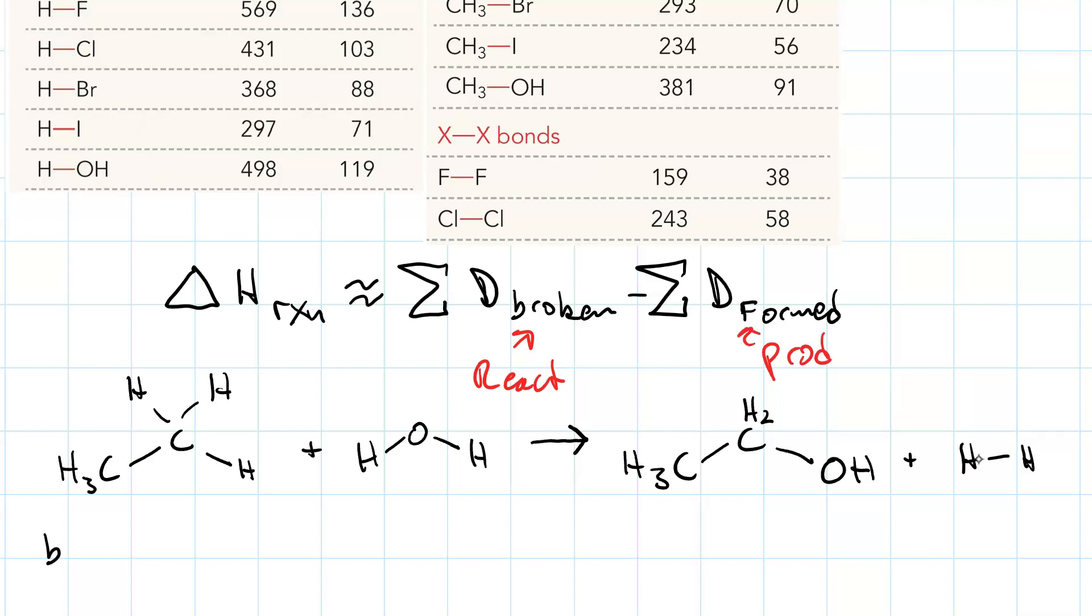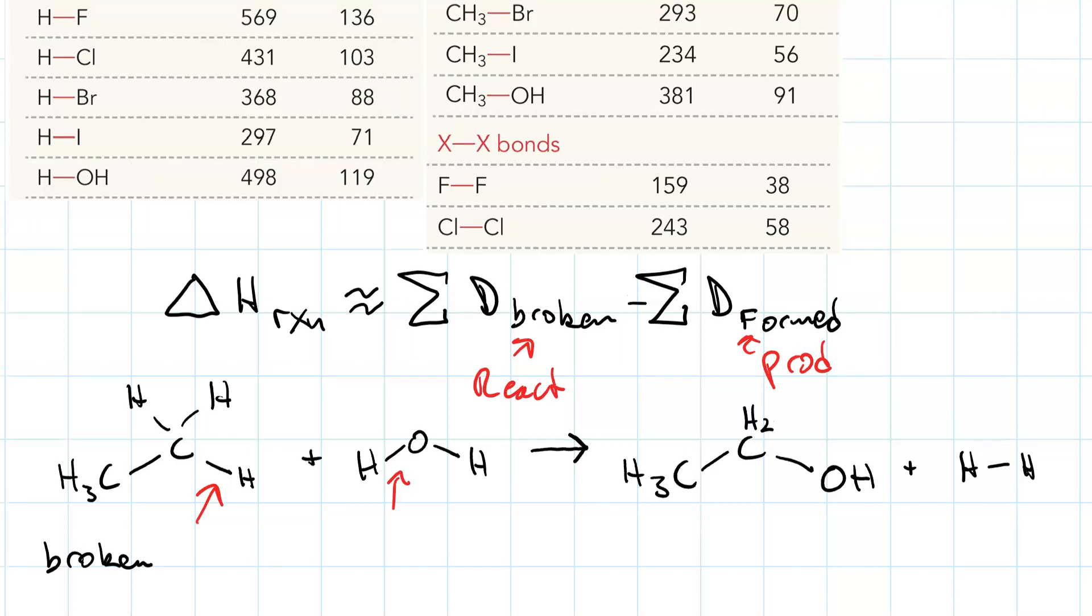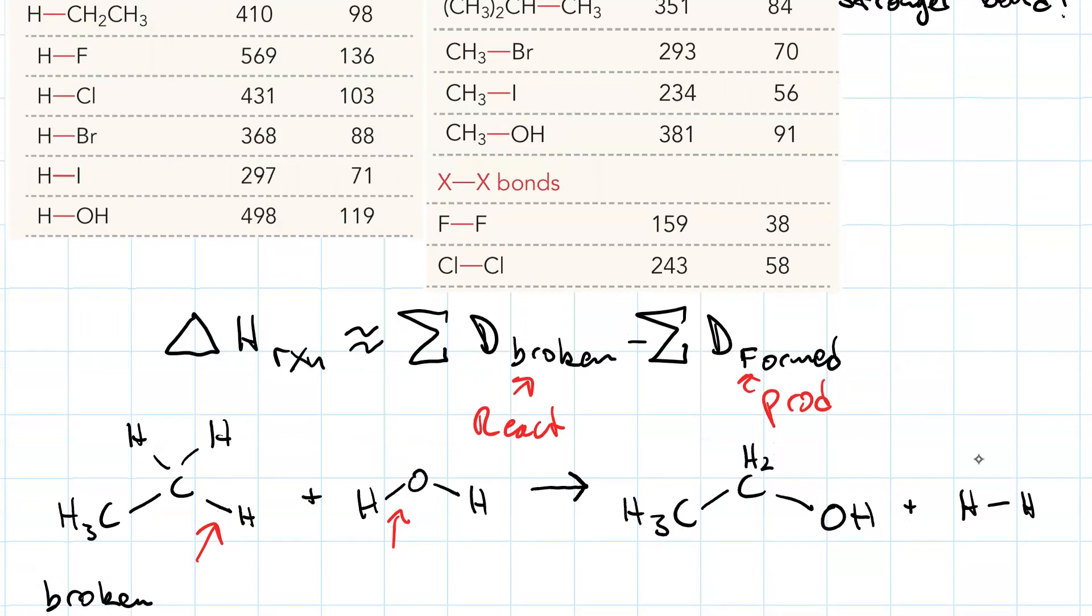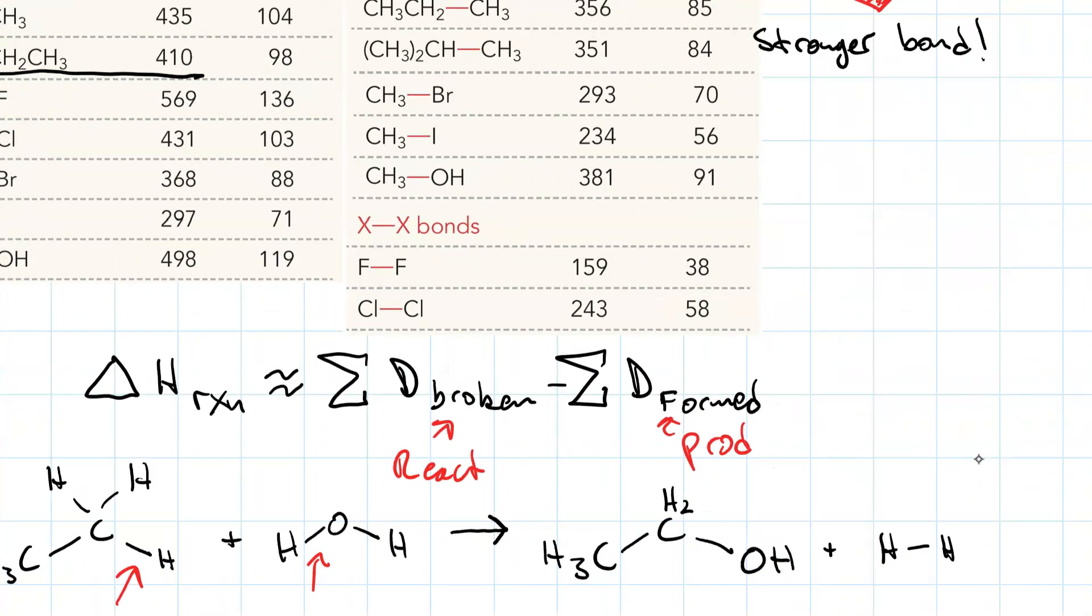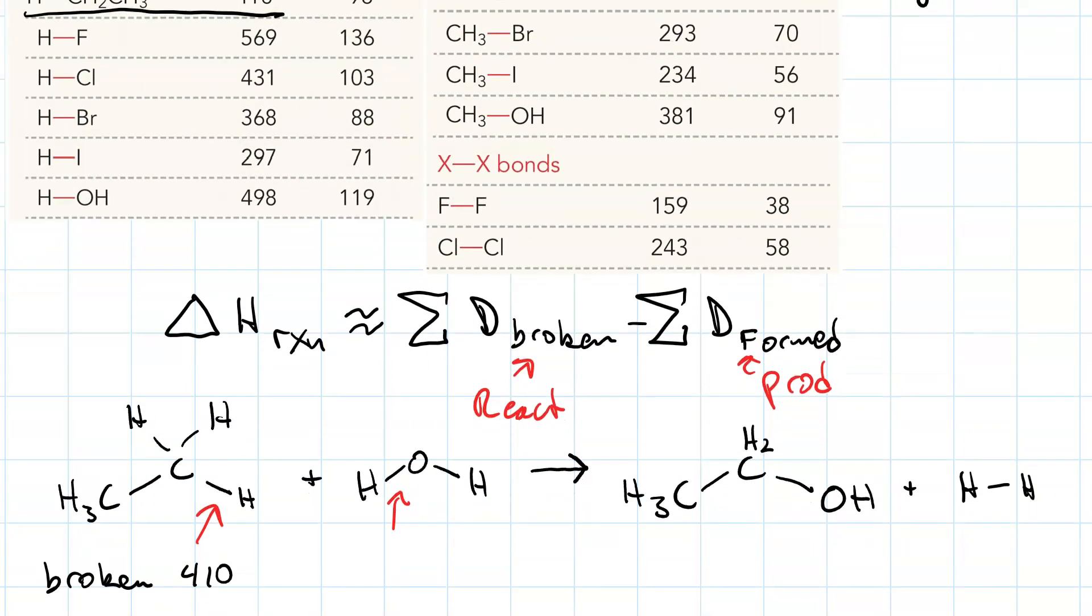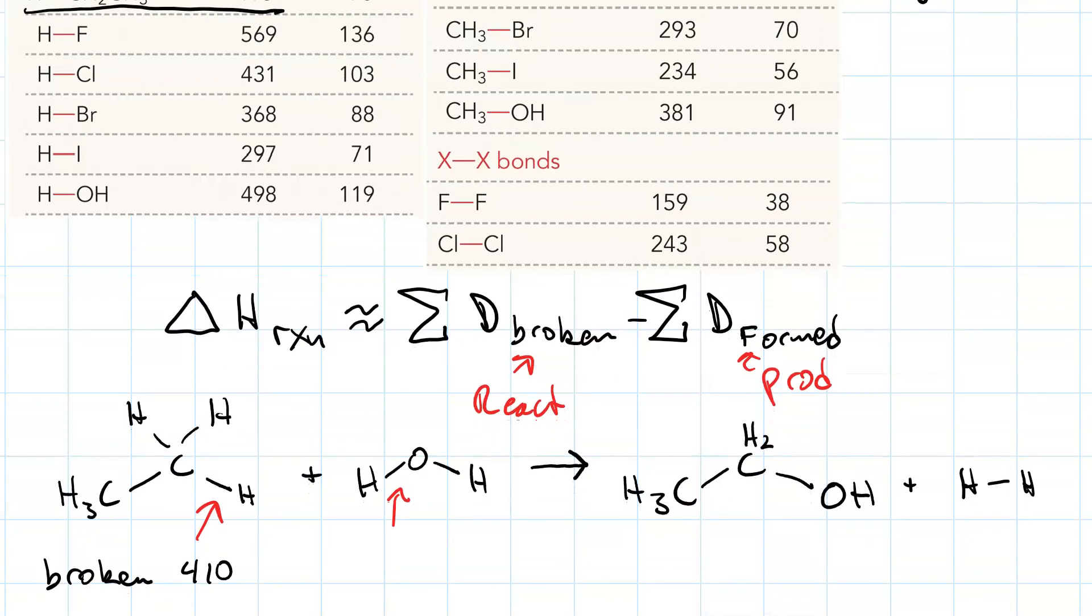Let's tabulate. What are we breaking? We're breaking that and that. According to our table, the ethyl-CH bond is 410 kJ per mole, and the H-OH bond in water is 498 kJ per mole.